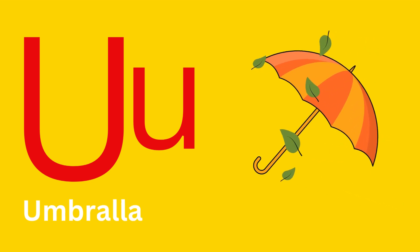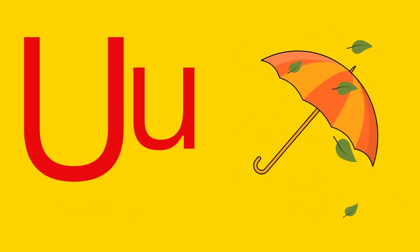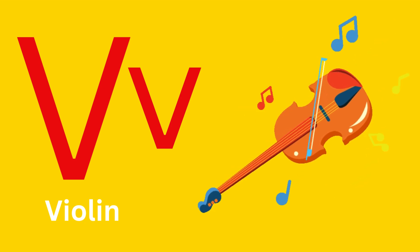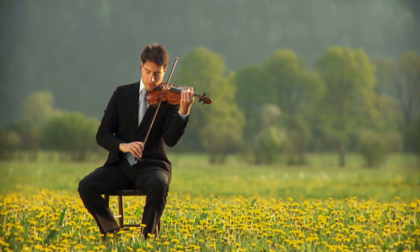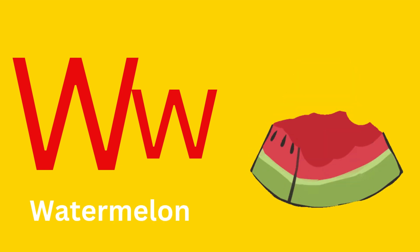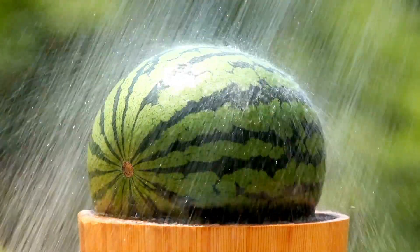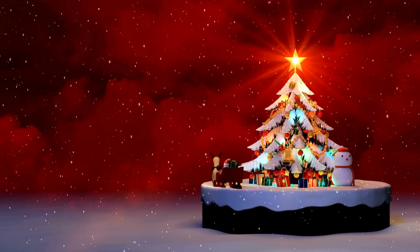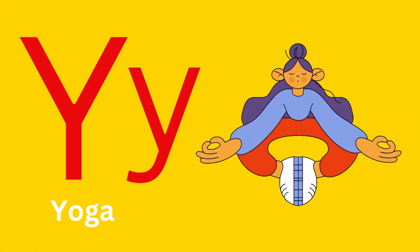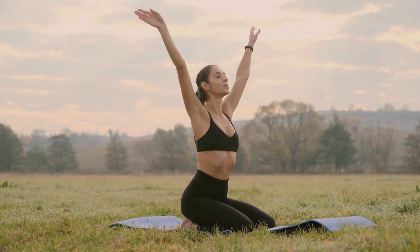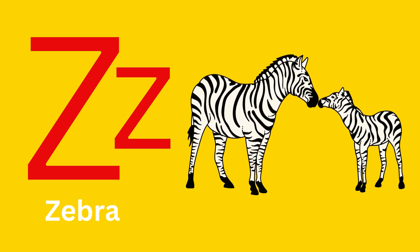U for Umbrella. X for Christmas tree. Y for Yoga. Z for Zebra.